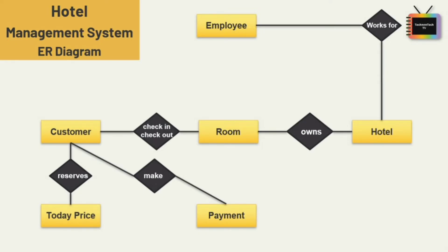These are the relationships defined among the six entities. We can also add specialization. For the employee entity, I am adding specialization. Specialization is a top-down approach where one higher-level entity can be broken down into two or more lower-level entities. If you don't know about specialization and generalization concepts, I have added a video link in the upper right corner of your screen — click that link and watch that video first.